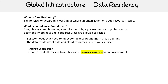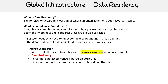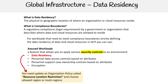Assured Workloads is a feature that allows you to apply various security controls to an environment. It's not just for data residency, but that's its primary feature. It covers data residency, personal data access controls based on attributes, personnel support case ownership controls based on attributes, and encryption. In order to apply data residency, you're going to use an organizational policy called a resource location restriction and choose the allowed region or multiple regions.